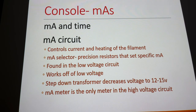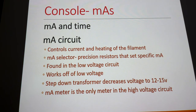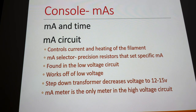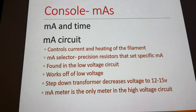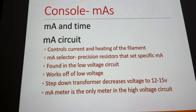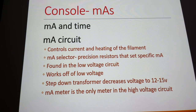At the console, MA and time are controlled through two different circuits. The MA circuit is the low-voltage circuit. The timer circuit is between the auto transformer and the step-up transformer, in the lower voltage circuit — it controls the current and heating of the filament. We don't have MAS until we make an exposure; at the point of exposure, electrons jump across the tube and we have MAS.